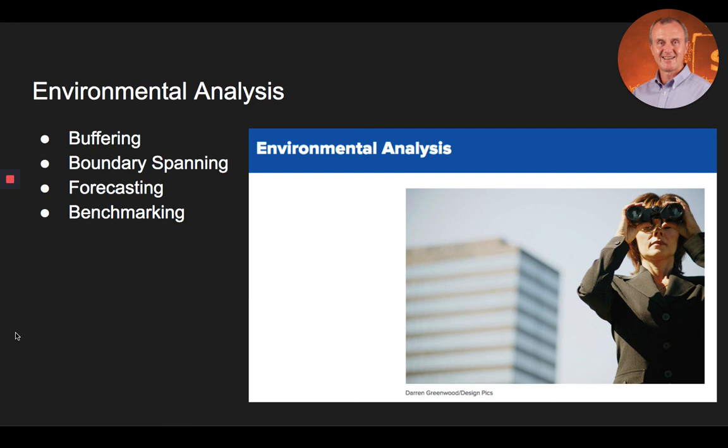Buffering entails absorbing uncertainty from an organization's environment so that the firm can operate more efficiently. Boundary spanning occurs when an organization scans its environment to detect information it believes is important for its business. Forecasting is the process of trying to predict what will happen in the future. Quantitative forecasting uses numerical data from past performance to help predict future performance. Qualitative forecasting uses subjective methods such as judgments and the opinions of experts to predict future performance.